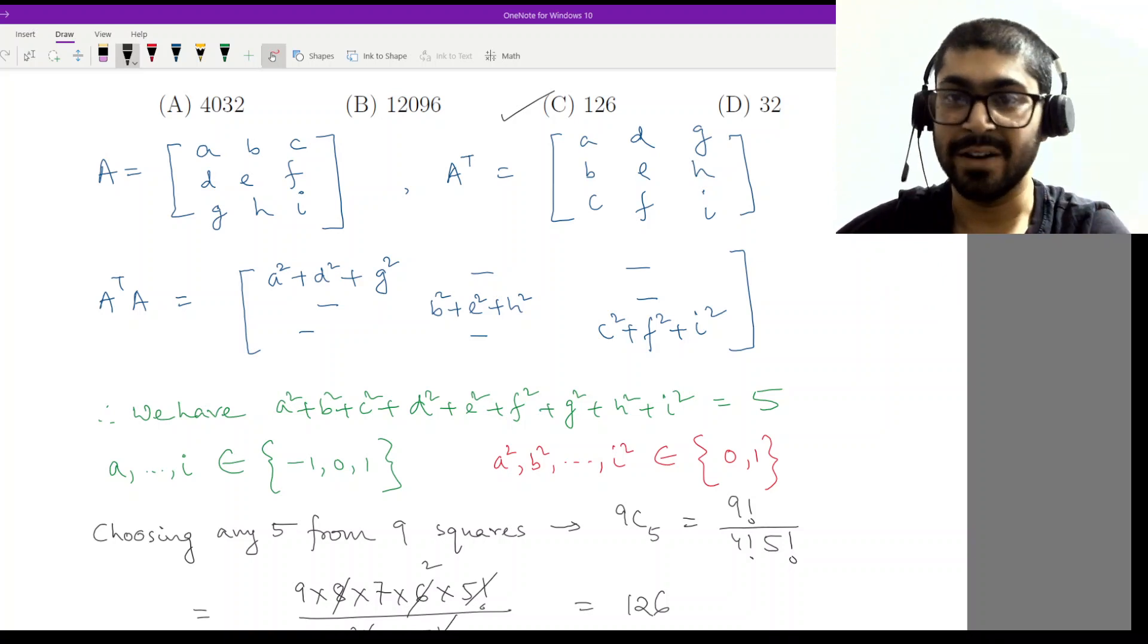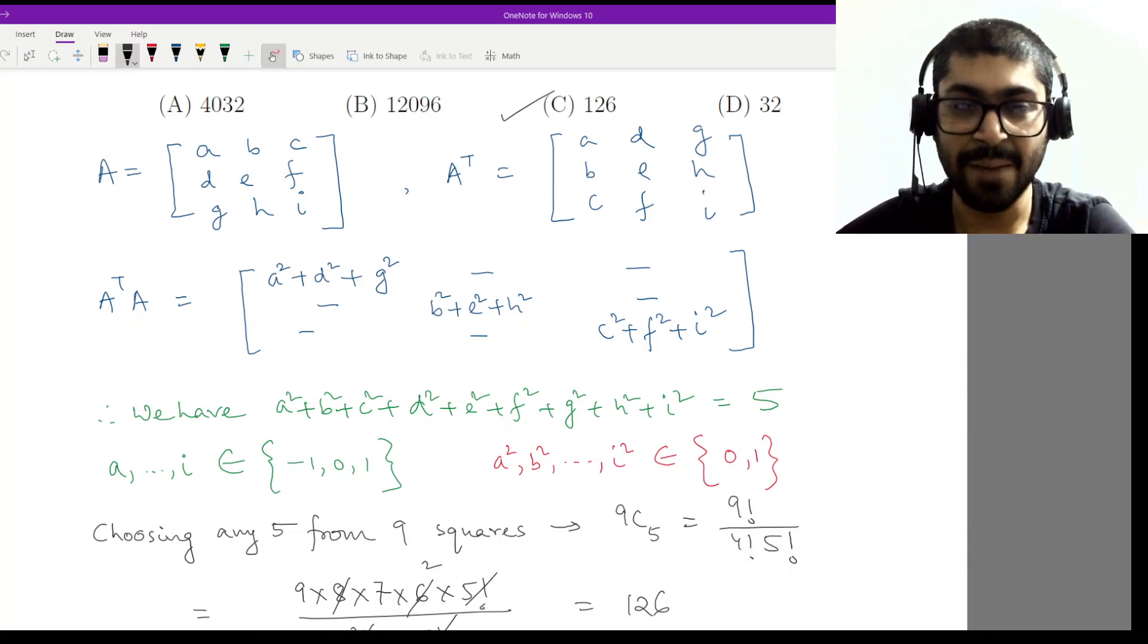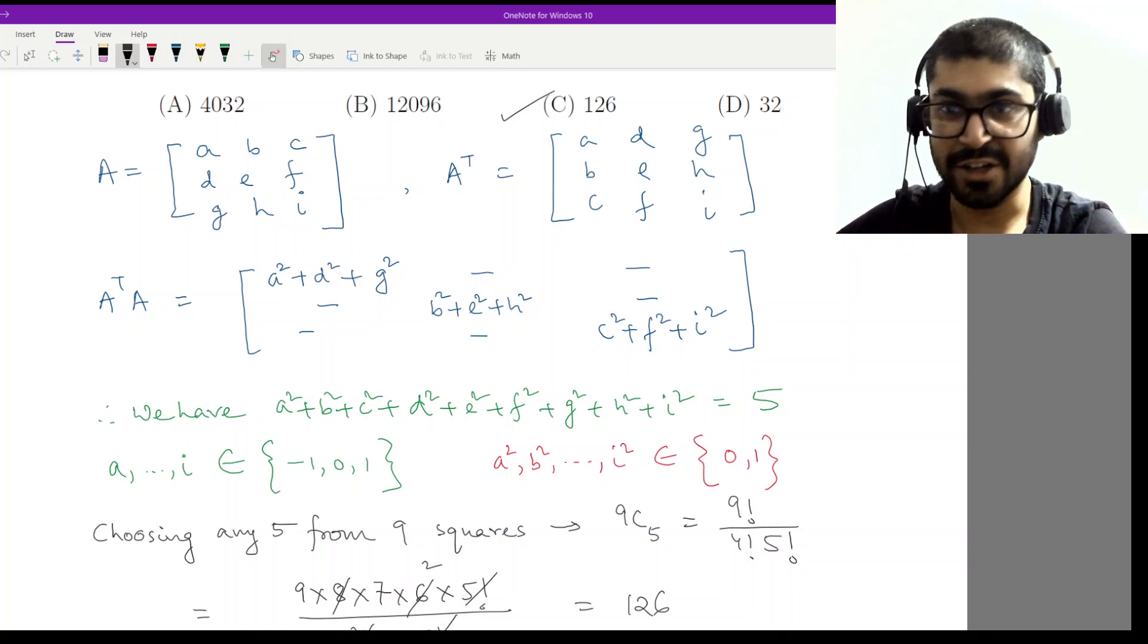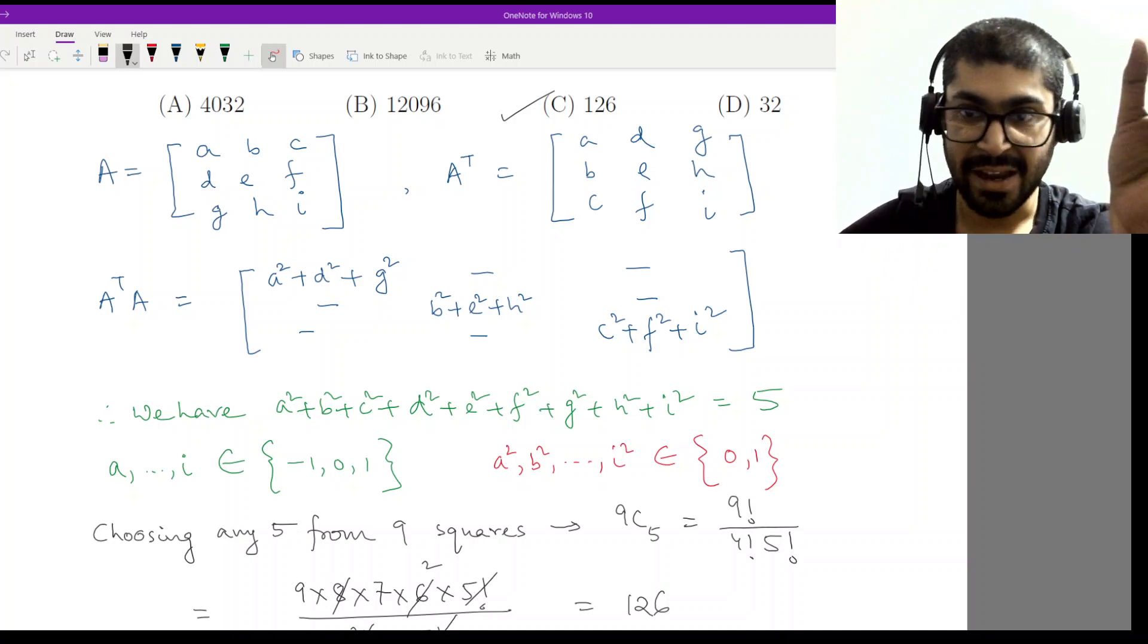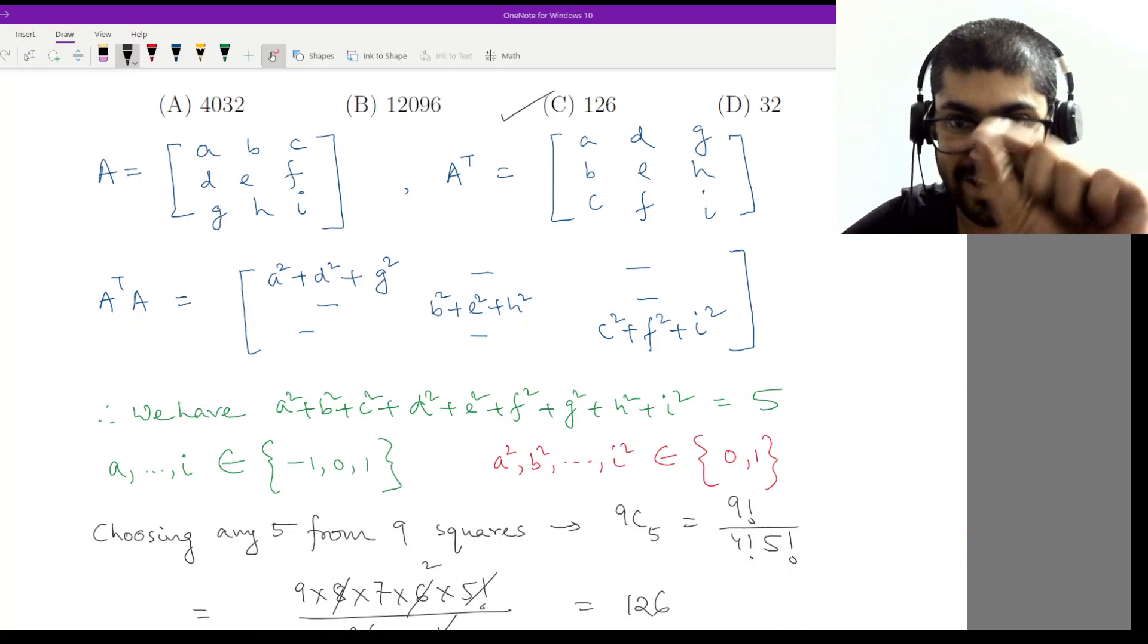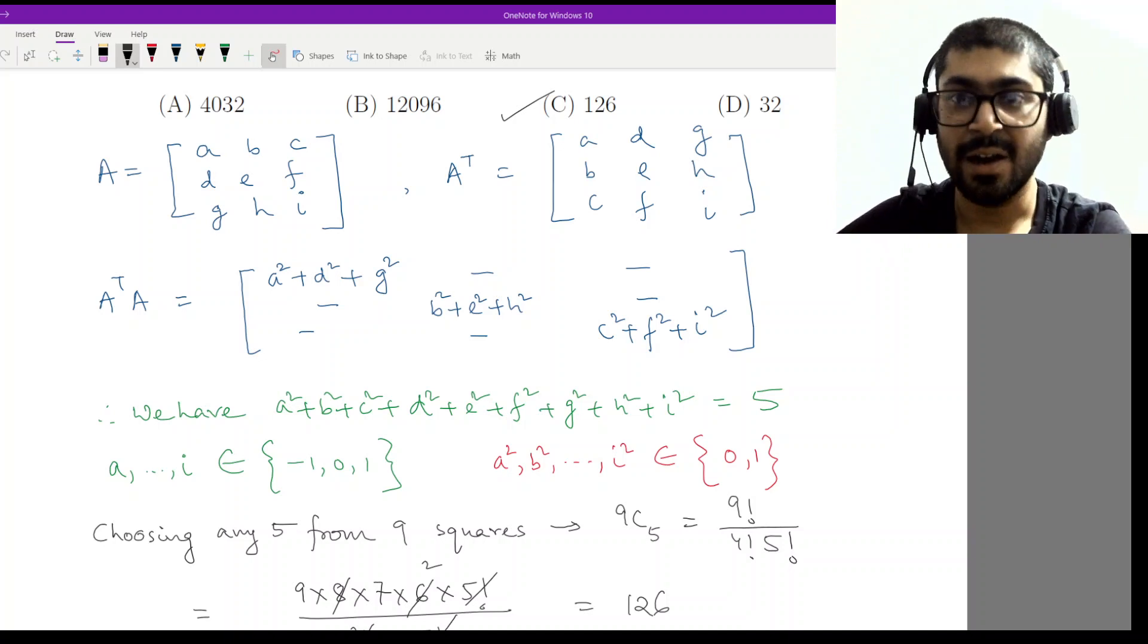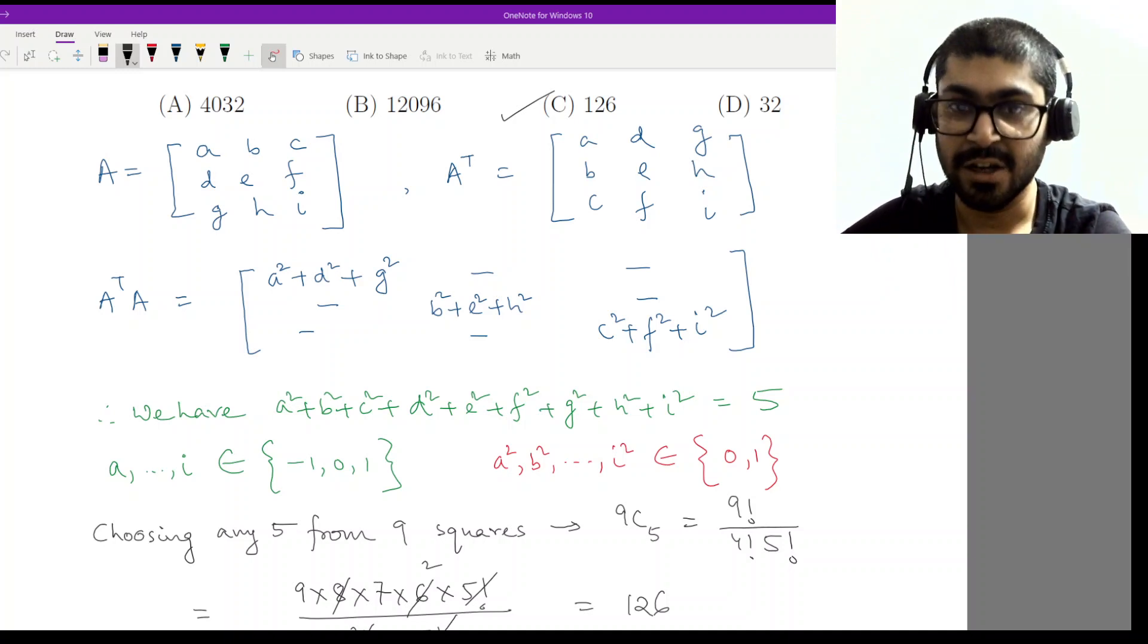Let us have a quick recap. We first looked into a general matrix of 3×3 order, we took its transpose, we did the multiplication, we checked the diagonals, they are all squares. So when we get the sum of diagonals to be five, that means I have to choose any five of these to represent one.